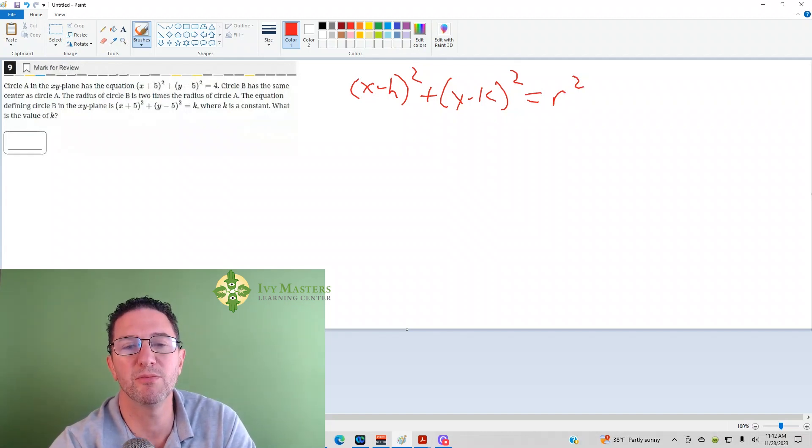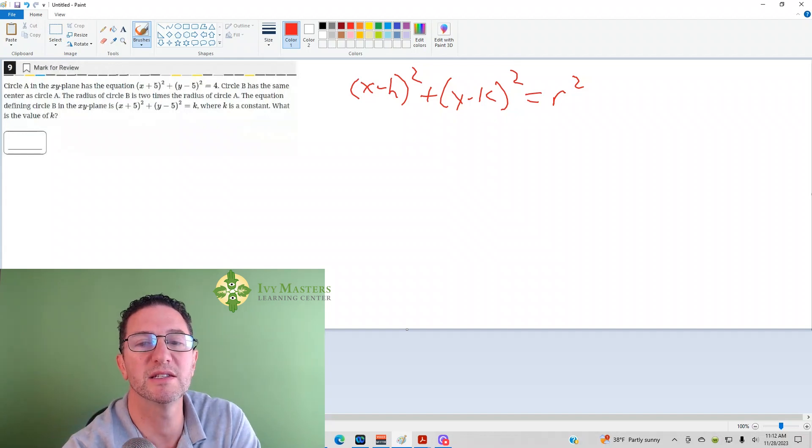So here, (x,y) is a point on the circumference of the circle. (h,k) is the center. It tells you that they have the same center.